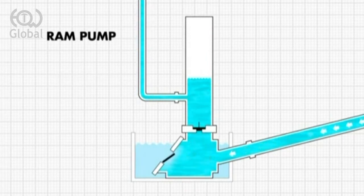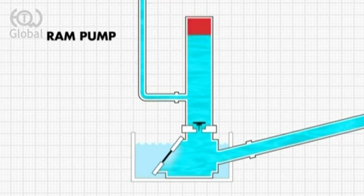Then the pressure falls in the lower part of the pump and the waste valve opens, allowing the water again to flow down the drive pipe. The waste valve closes once more, the delivery valve opens, and the cycle starts again.